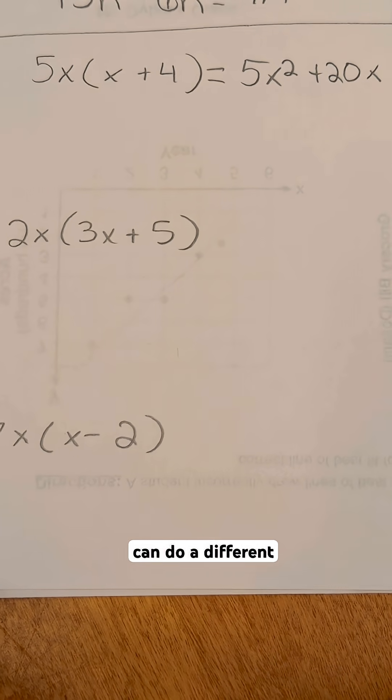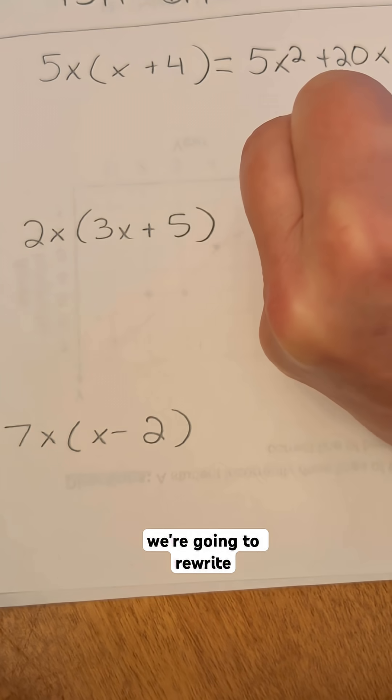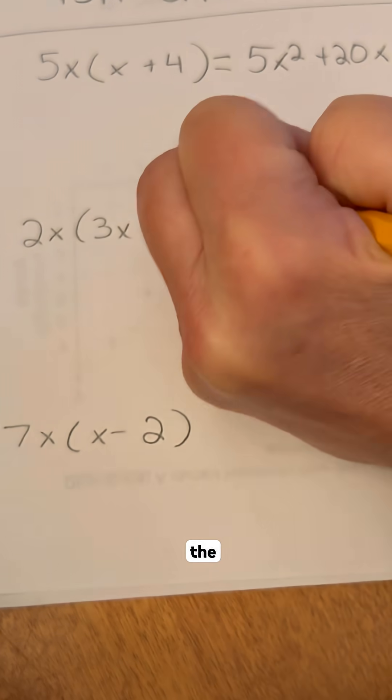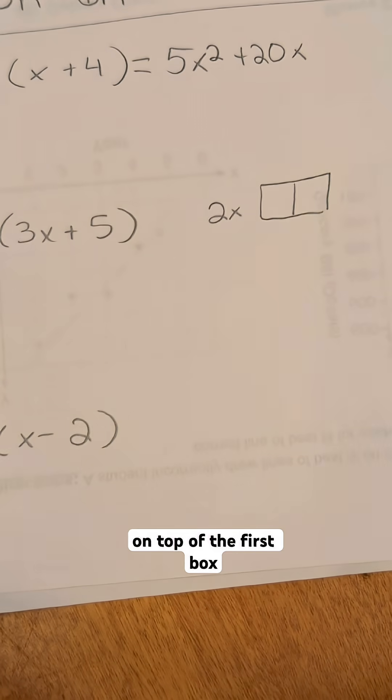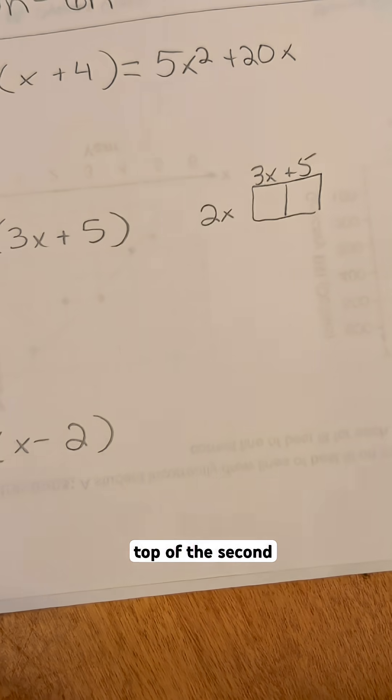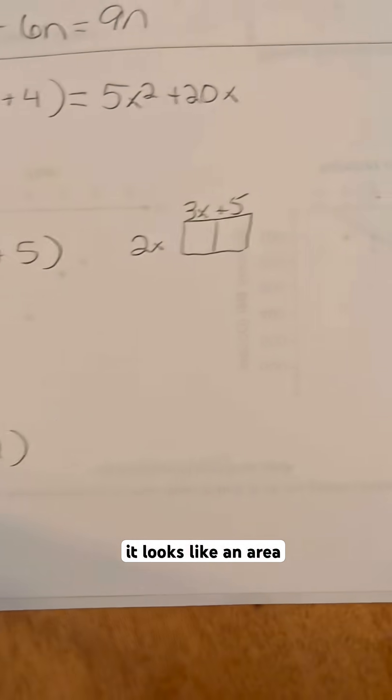Now on our second one we can do a different model, which is kind of like an area model. We're going to rewrite this where we put the number that's on the outside outside the box right here like this, and then we're going to put the terms 3x on top of the first box and then the plus five on top of the second box. Then we can rewrite it a little bit differently so it looks like an area of a square.